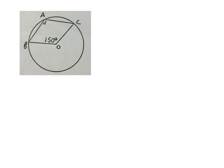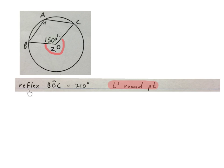Be careful on the next rider. We are so into cyclic quadrilaterals that we just want to say D and the 150 add up to 180 — but they won't. This point is not sitting on the circumference; this is not a cyclic quad. We first work out the reflex angle BOC, which equals 360 minus 150, giving reflex angle BOC equals 210 degrees — angles around a point.